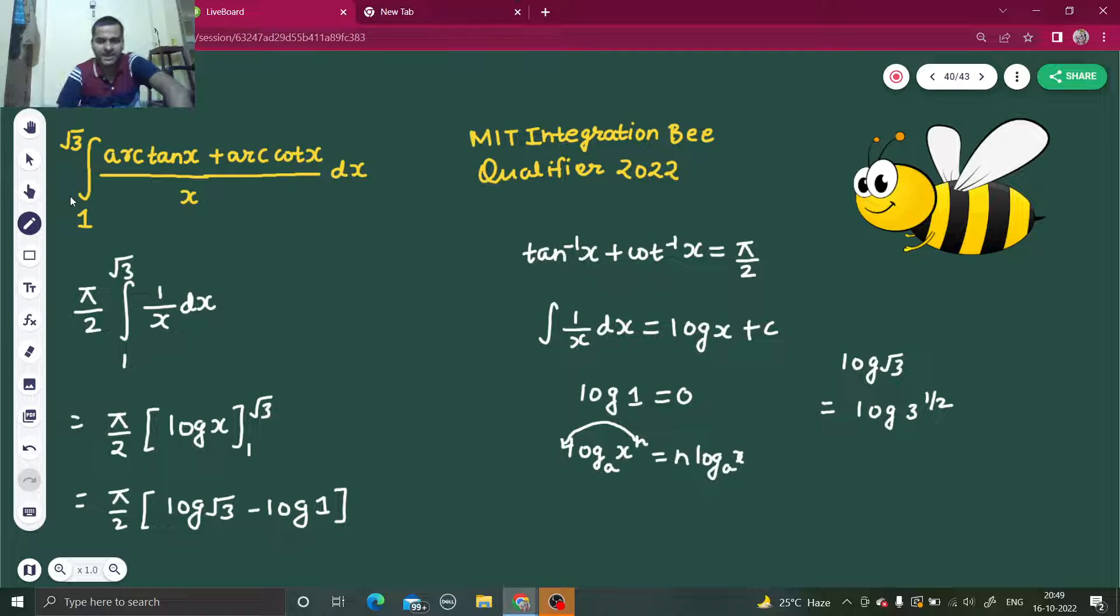Similar case is here, you can take the half to the front so you are left with log 3. So this can be written as pi by 2 log 3.